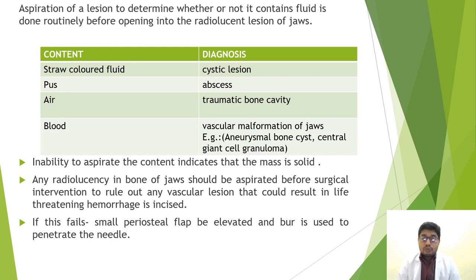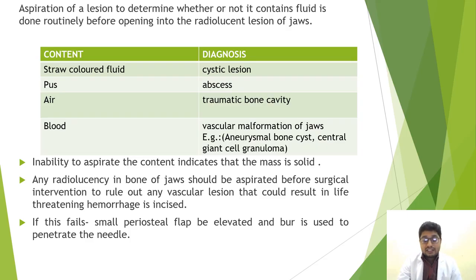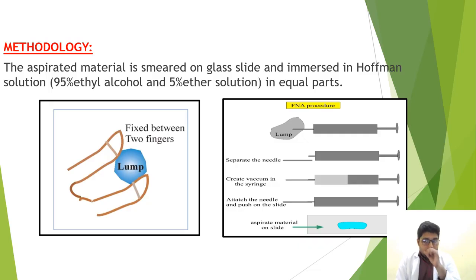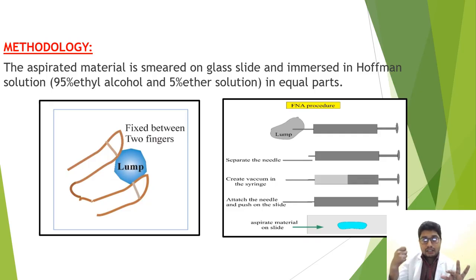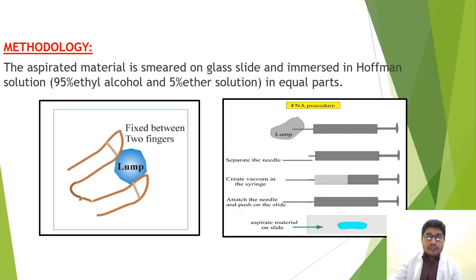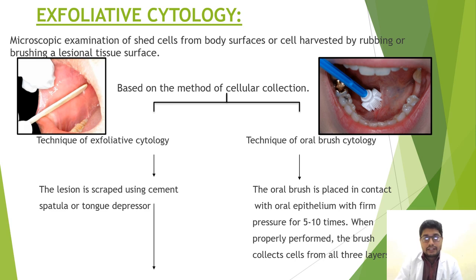If needed, a small periosteal flap is elevated and a burr is used to introduce the needle towards the mass in cases of intraosseous lesions. For the methodology, you feel the lump with your index finger and thumb, then place the needle over the mass and aspirate. The aspirated material is placed on a slide, made into a smear, stained, and examined under the microscope for diagnostic criteria.